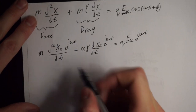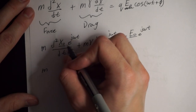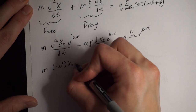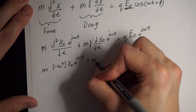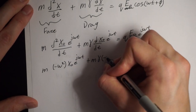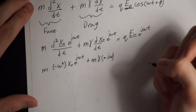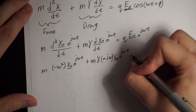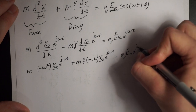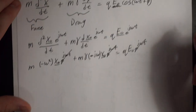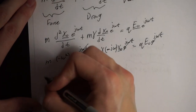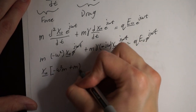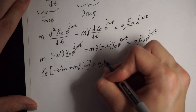Now we take these derivatives: mass times the second derivative of e^(jωt) gives negative ω² times x-naught e^(jωt), plus mass times gamma times the first derivative giving jω multiplied by x-naught phasor e^(jωt), and this equals q times E-naught phasor e^(jωt). These exponentials cancel because they appear on both sides, and now we want to isolate for x-naught, our displacement.